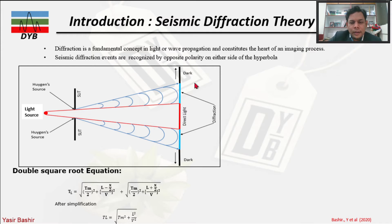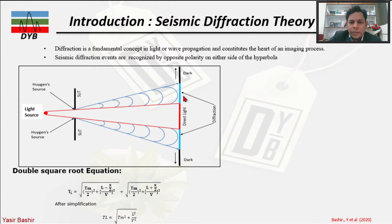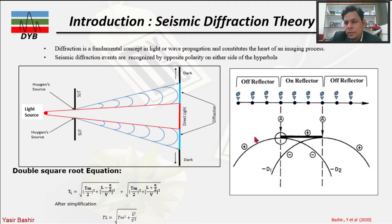The same effect happens every day during sunset, where you observe diffracted light in the sky. The diffracted light propagates from the edges and appears on both sides of the slit — you have dark on one end, diffracted light, and then direct light. This same principle applies in geophysics.